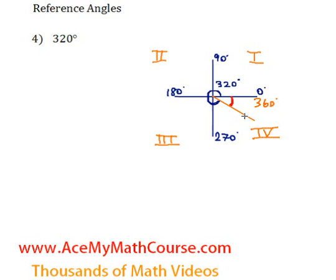Well, we're just going to subtract 320 degrees from 360 degrees. That's it. It's that simple.